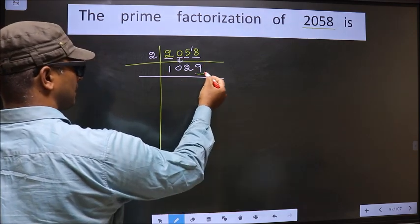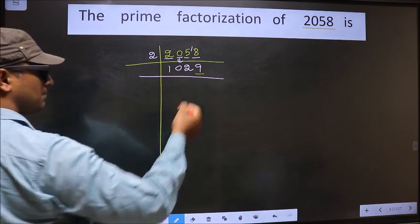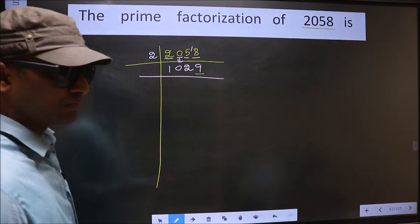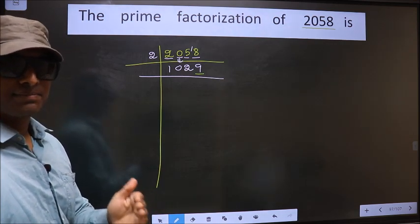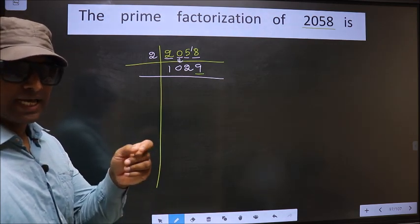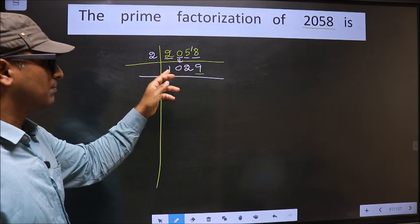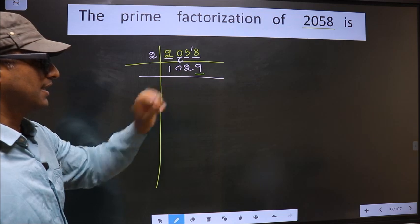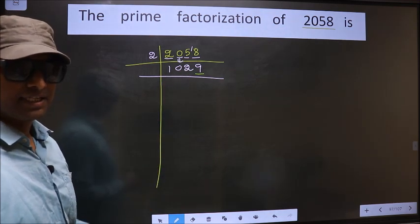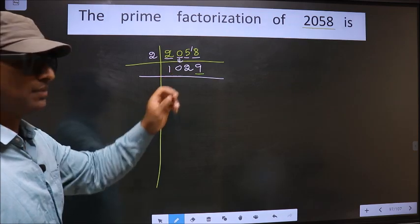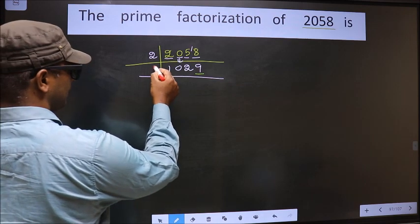Now for this number, the last digit is 9, not even, so this number is not divisible by 2. Next prime number 3. To check divisibility by 3, we should add the digits. That is 1 plus 0 plus 2 plus 9, we get 12. Is 12 divisible by 3? Yes, so this number is also divisible by 3. So we take 3 here.